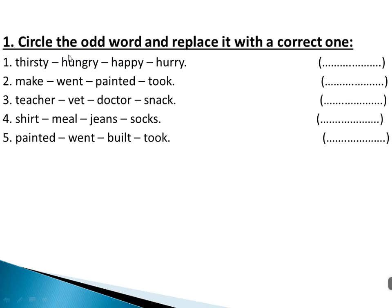Circle the odd word and replace it with the correct one. Number one: thirsty, hungry, happy, hurry. All of them are adjectives except 'hurry'. You can replace it with another adjective such as 'hard' or 'easy' or 'cold'.